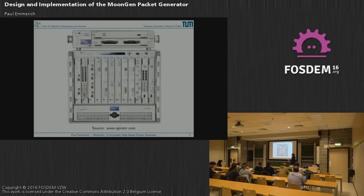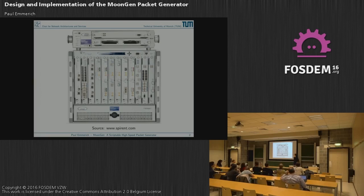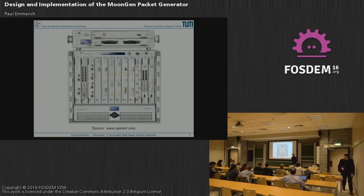So what's a Package Generator? Well, this is a Package Generator — it's a large box. You can buy them from some hardware vendors. They are usually really, really expensive — tens of thousands of euros, up to above 100,000 euros. What it does is it tests networks. You put in your Ethernet cable and then it sends out lots of packets. By lots of packets I mean you can put in multiple 10 gigabit or 100 gigabit cables and it completely fills them with small packets, which is quite challenging to do.